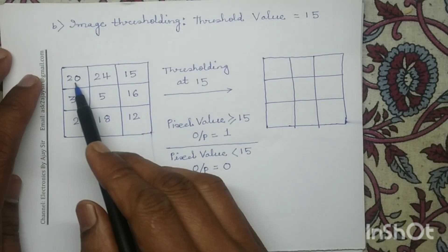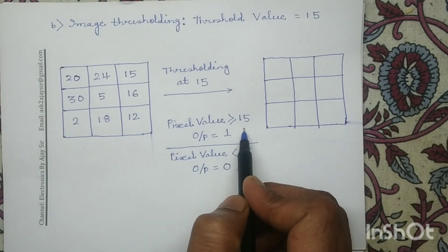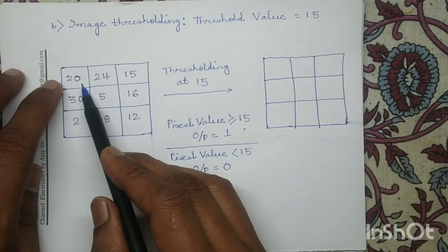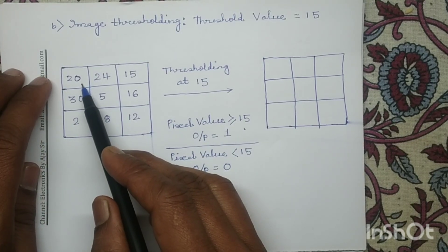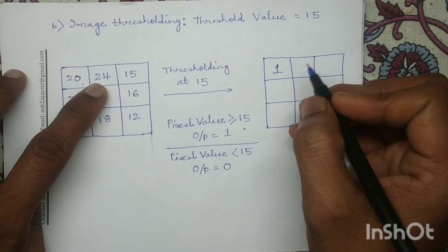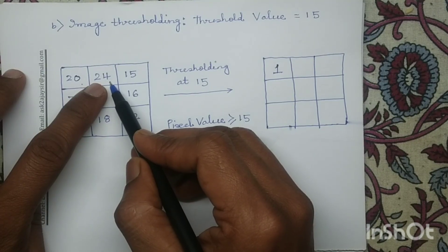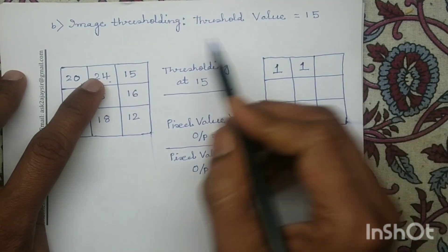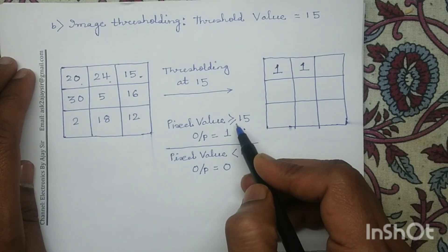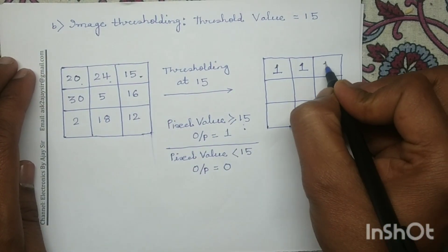Now each pixel value will be compared with the threshold value 15. If it is greater than or equal to 15 we assign intensity level 1, else intensity level 0. For pixel value 20, it satisfies the condition — it is greater than or equal to 15 — so in the output image I will write 1. Similarly 24 satisfies the condition, so I write 1. 15 also satisfies the condition — greater than or equal to 15 — so in the output image I write 1.